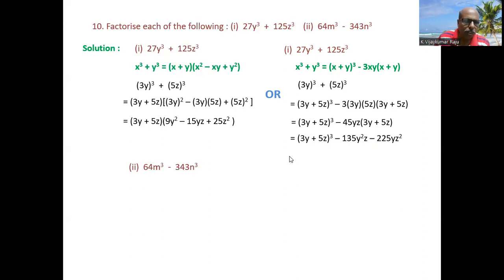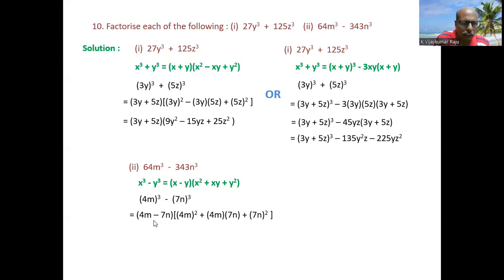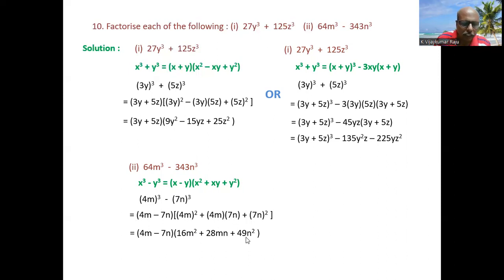Question 10, second part: factorize 64m³ - 343n³. Using x³ - y³ = (x-y)(x² + xy + y²): 64 = 4³ and 343 = 7³, so this is (4m)³ - (7n)³. Therefore: (4m - 7n)(16m² + 28mn + 49n²). Using the alternative formula: (4m-7n)³ + 84mn(4m-7n) = (4m-7n)³ + 336m²n - 588mn².